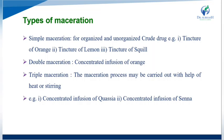Now we will see the types of maceration process: simple maceration, double maceration, and triple maceration. Simple maceration is for organized or unorganized crude drugs — examples are tincture of orange, tincture of lemon, and tincture of squill. Double maceration is for concentrated infusion of orange. Triple maceration, which may be carried out with help of heat or stirring, is used for concentrated infusion of quassia and senna.